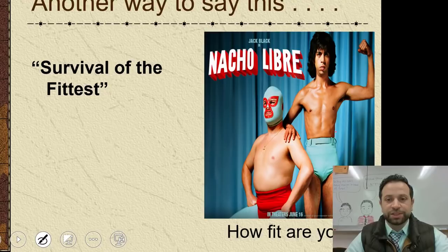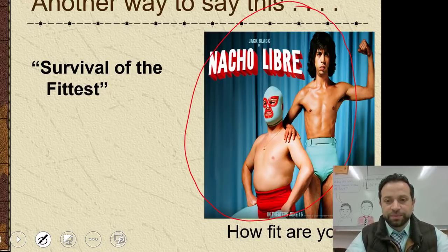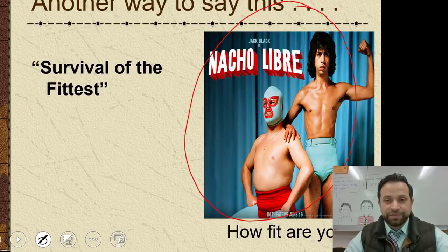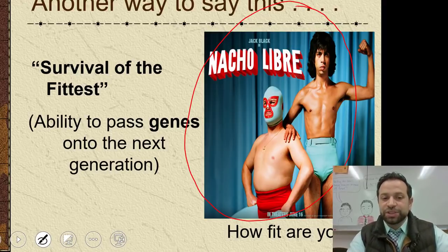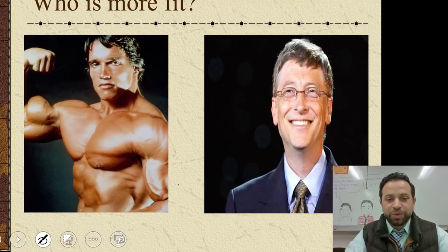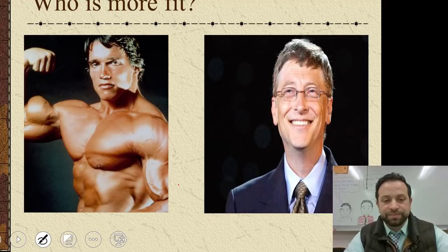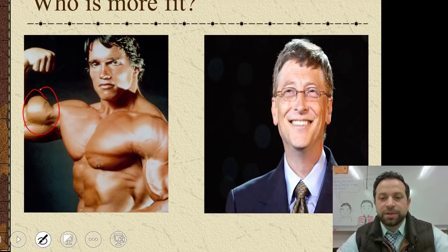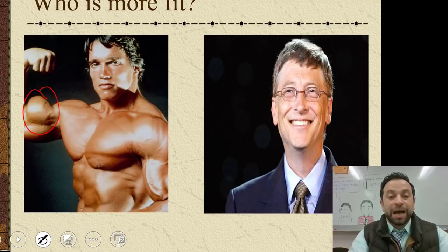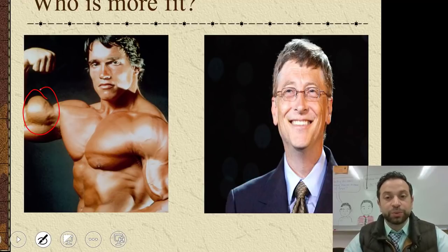This brings us to survival of the fittest. Survival of the fittest really means the ability to pass on your genes onto the next generation — it may not have anything to do with how big and buff you are. Think about Arnold versus Bill Gates: you've got to think about who has the ability to pass on their genes and how many children they each have. Don't be fooled by just looking at who looks bigger or buffer.